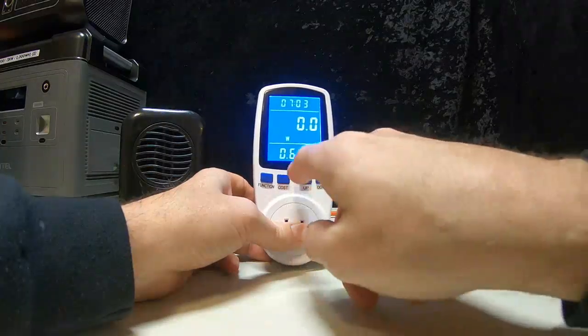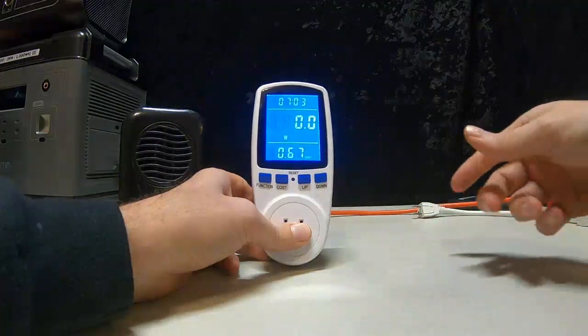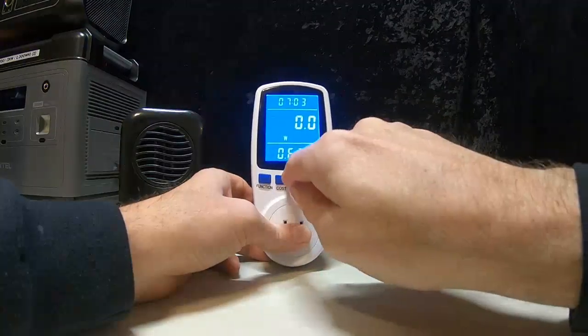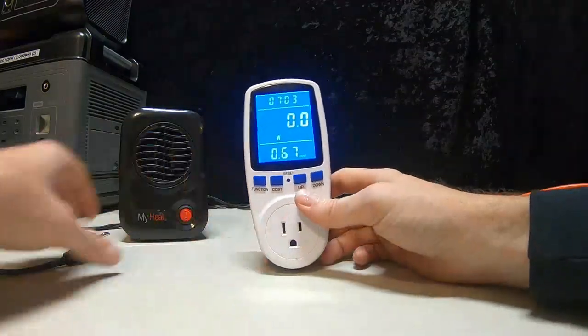And if you want to reset your numbers, you just hold down that little reset right there with like a little pin or a pen or you can even use a probe from a voltmeter. You just stick it in there, hold it down, everything resets.